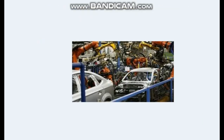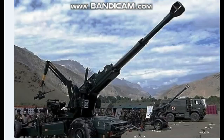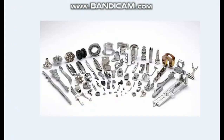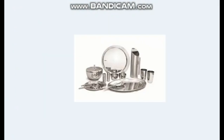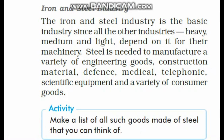Steel is used in the automobile industry, for the purpose of construction, in defense, for making scientific equipment, basic molds, bolts and nuts, utensils which we use in our homes, and surgical equipment. These are just a few examples of where we use steel. If you look at your home surroundings, you can find many items where steel is being used. A useful follow-up question: list goods which are made of steel.